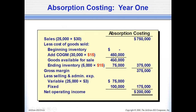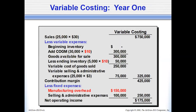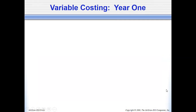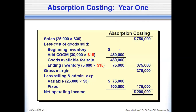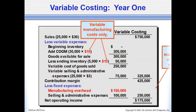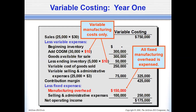The net operating income under absorption costing is $200,000. For variable costing, that's $175,000. As stated earlier, absorption costing will be higher by $25,000 — that's $200,000 minus $175,000. That $25,000 equals the fixed manufacturing overhead cost per unit of $5 times the 5,000 units by which production is greater than sales. So that's an ending inventory of 5,000 units.